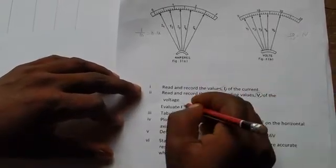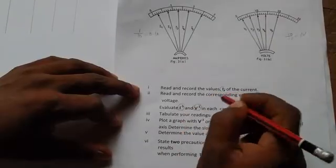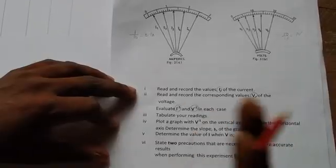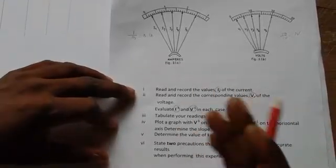The current, the voltage, the reciprocal of the current, and the reciprocal of the voltage. So, our table will carry these four parameters. That means we'll have four columns, so we'll make it five. The first column will be for serial number, that is the number of experiments.